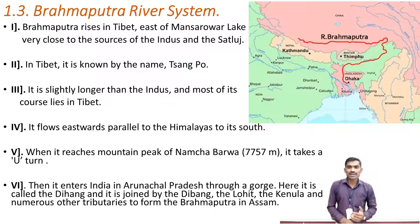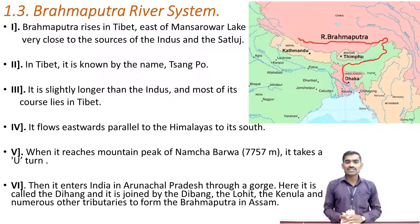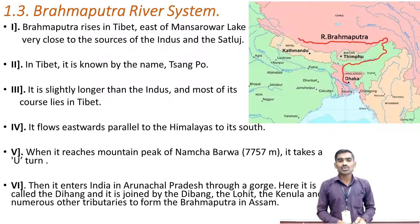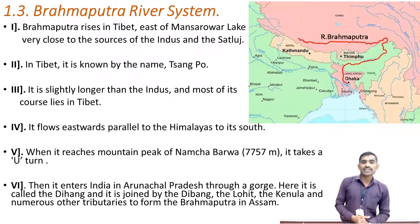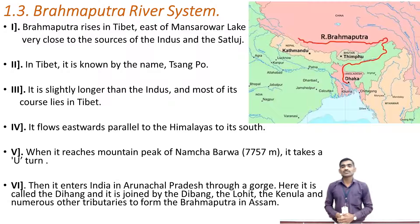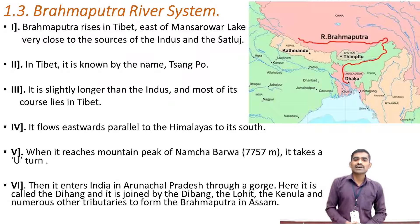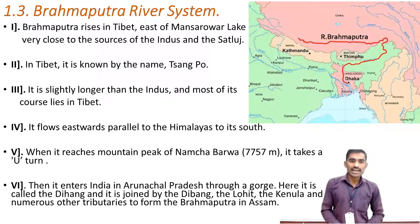The Brahmaputra river rises in Tibet, towards the east side of the Mansarovar lake. At the same place, near the Mansarovar lake, are also the sources of the Indus and Satlaj rivers. However, the Indus and Satlaj rivers rise on the west side of Mansarovar lake, whereas the Brahmaputra river rises towards the east side.